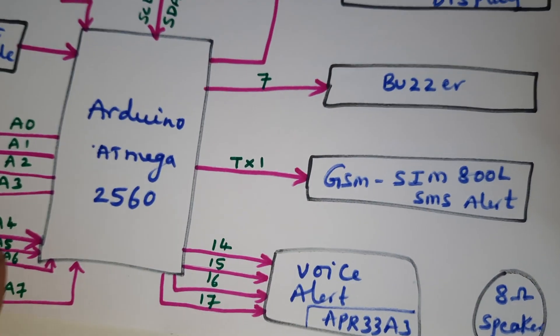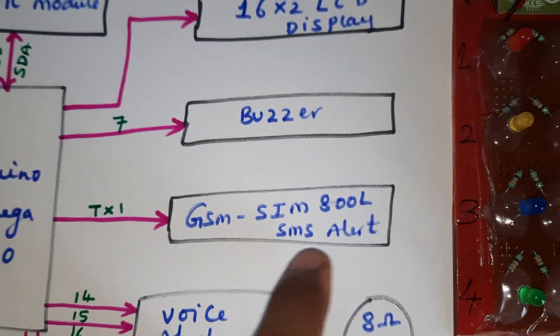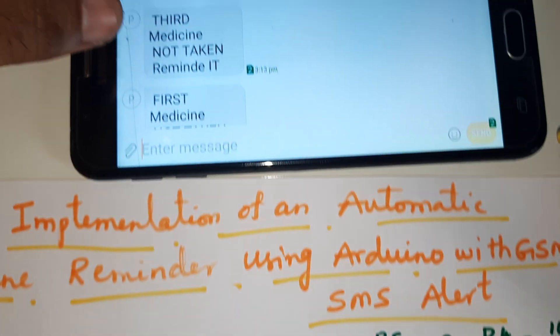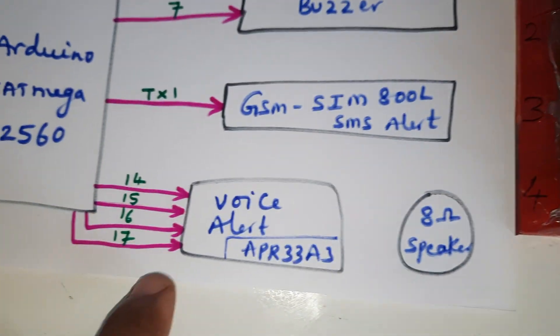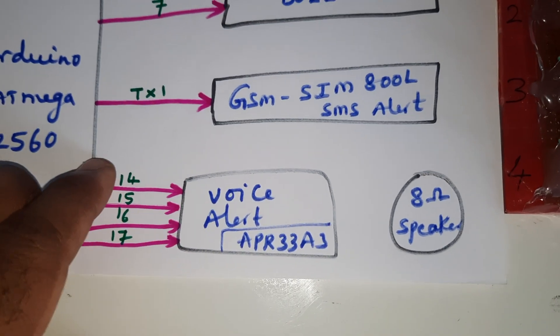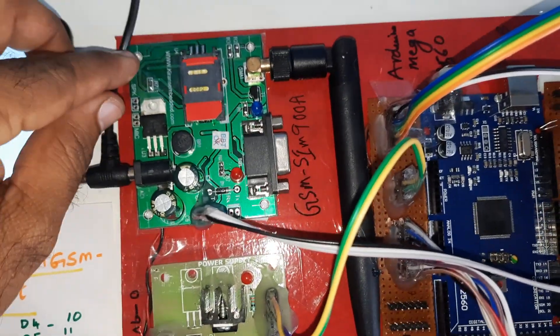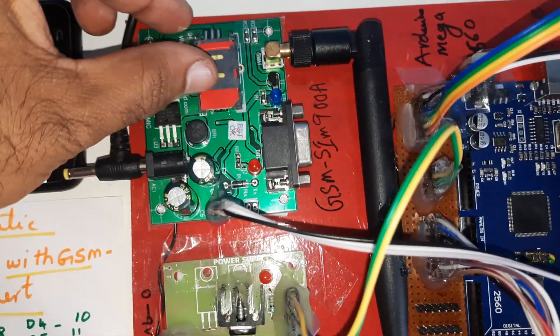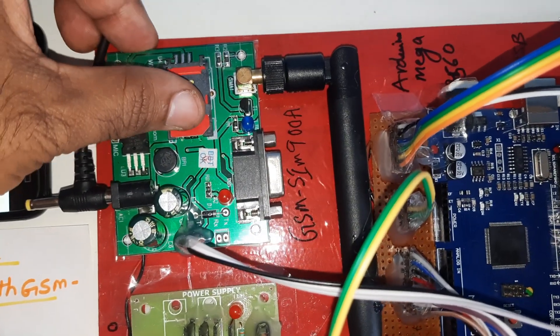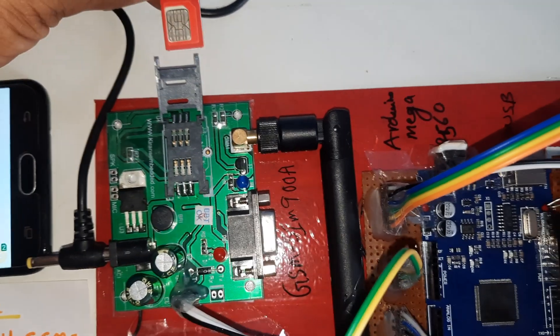One buzzer gives a small buzzer indication when the time interval is set. If medicine is not taken, it will send an SMS alert — for example, 'Third medicine not taken' or 'First medicine not taken.' If medicine is taken, there is no SMS alert. The relay pins are connected to GPIO pins 14, 15, 16, 17, and an 8-ohm speaker is used. One SIM card is used — you can use Idea, Airtel, Vodafone, or BSNL.